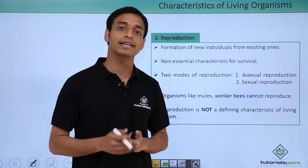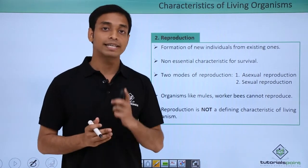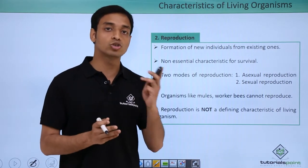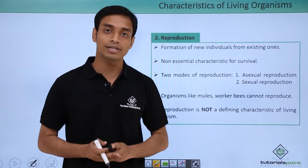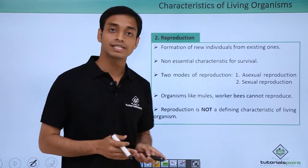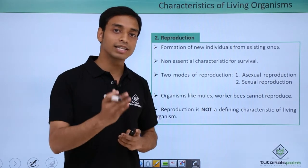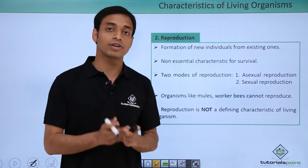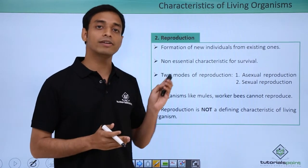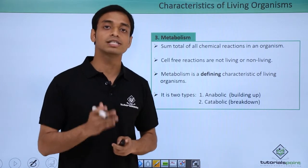Reproduction can happen in two modes: asexual and sexual. In asexual reproduction, there is no fusion of male and female gametes — this mode is uniparental. In sexual reproduction, it is biparental, requiring two individuals and fusion of male and female gametes. Some organisms like mules, worker bees, and infertile human couples cannot reproduce. These are living organisms but unable to reproduce, so reproduction is also not a defining characteristic of living organisms.